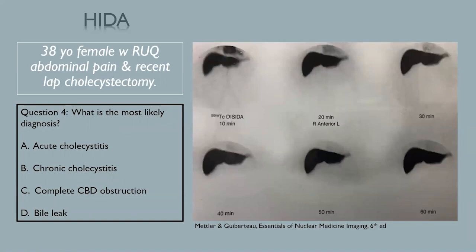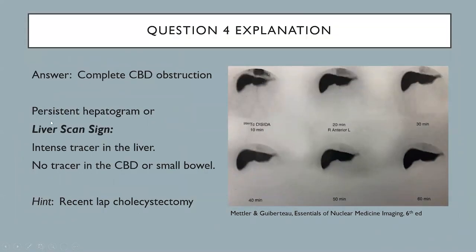This is a 38-year-old female with right upper quadrant abdominal pain and recent laparoscopic cholecystectomy. There is intense radiotracer activity in the liver parenchyma but no significant excretion of activity into the biliary ducts and into the small bowel even up to 60 minutes of imaging. This is the persistent hepatogram or liver scan sign — intense tracer activity in the liver and no tracer in the common bile duct or small bowel, likely due to high-grade or complete common bile duct obstruction.